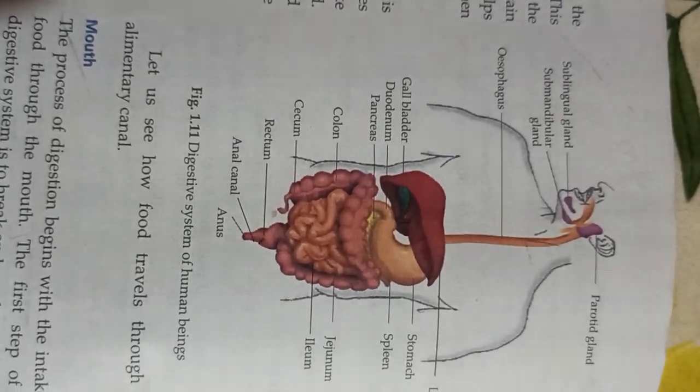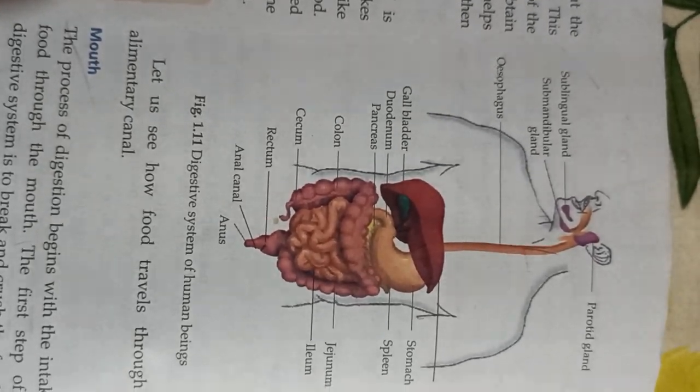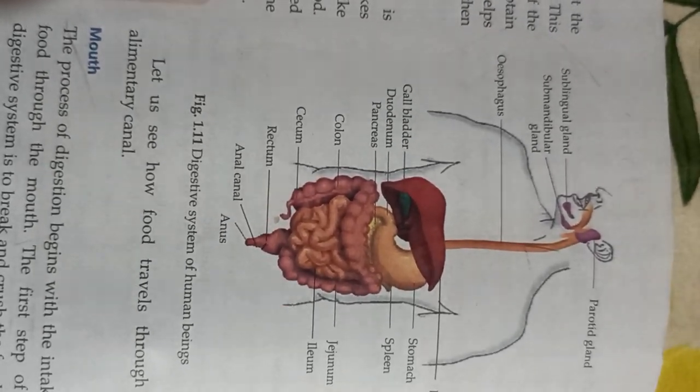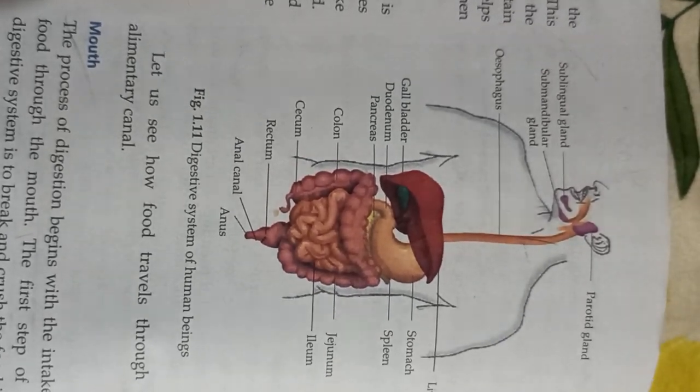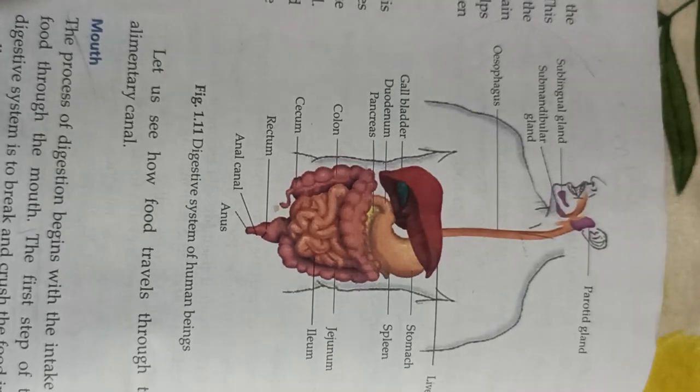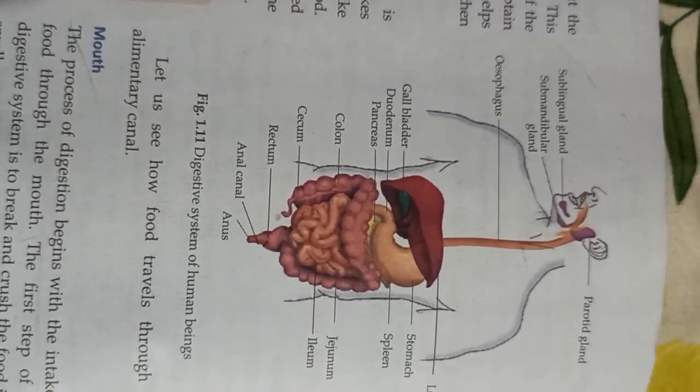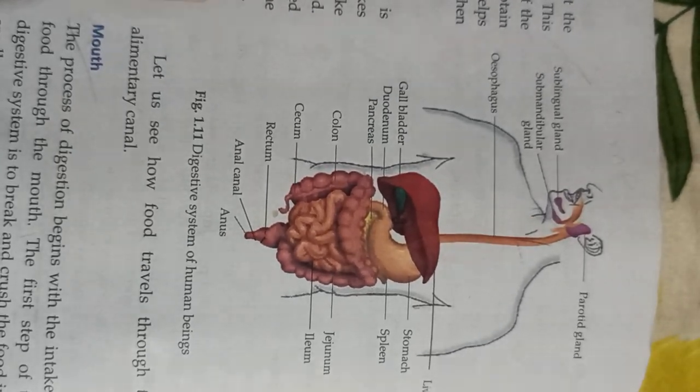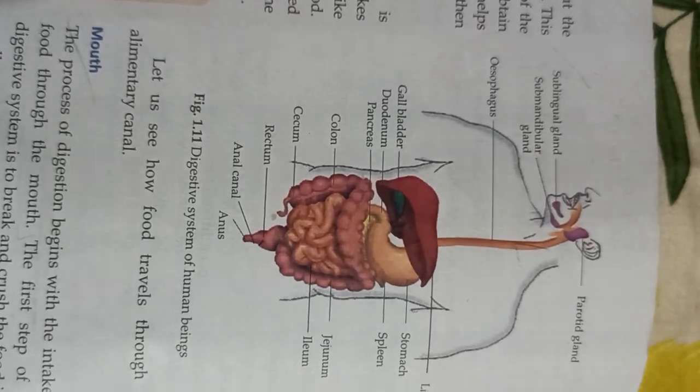In the mouth, carbohydrate contains starch, and when we chew food, the starch breaks down into maltose. This food gets converted into bolus.